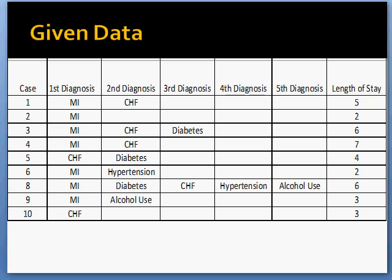The data we were given was sample claims data for 10 cases. In this chart, MI equals myocardial infarction and CHF equals congestive heart failure. Case number seven was deleted from our analysis because the diagnosis was determined to be an ACL tear, or an anterior cruciate ligament problem, which did not fit the requirements for classifying the severity of the disease.